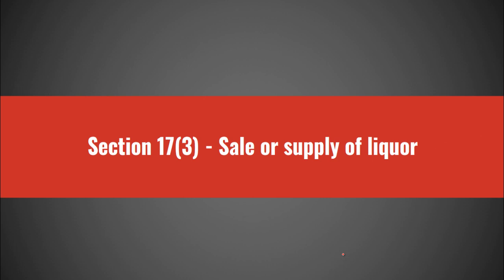Next is Section 17 subsection 3, which deals with sale or supply of liquor. Section 17 was already present in the act; its new subsection 3 says sale of liquor shall be permitted — 'shall' means it is mandatory — and it shall be permitted only to liquor vents which have a license. Additionally, their shop should not be located within 500 meters of any national or state highway.